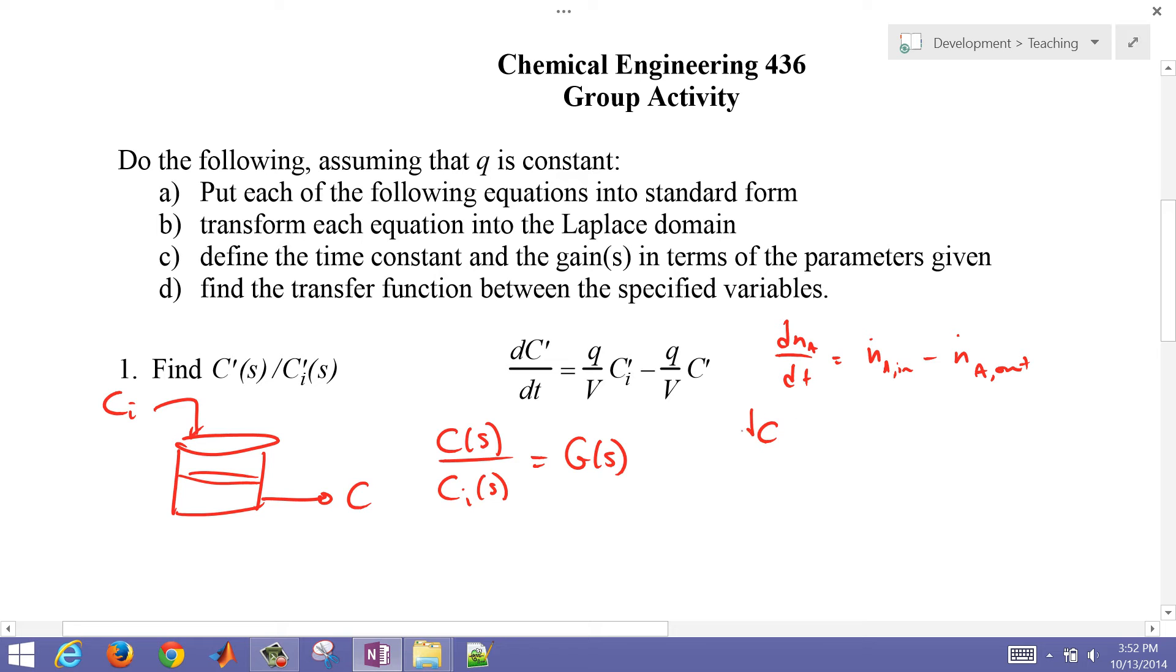Let's say I had concentration of A times the volume. The volume is going to be constant. And then I have Q times C in, C_A in minus Q times C_A out or C_A in the tank.